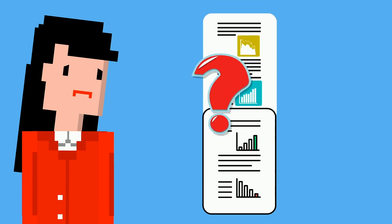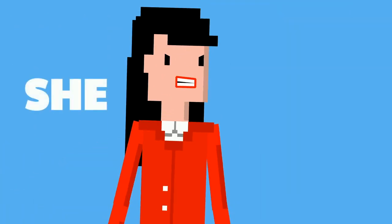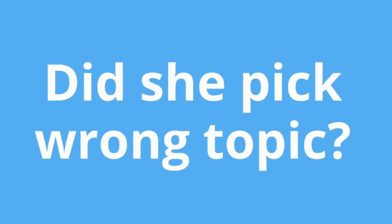But when she gets to the databases, Sheila is having trouble finding what she needs to back up her argument. She panics. Did she pick the wrong topic?